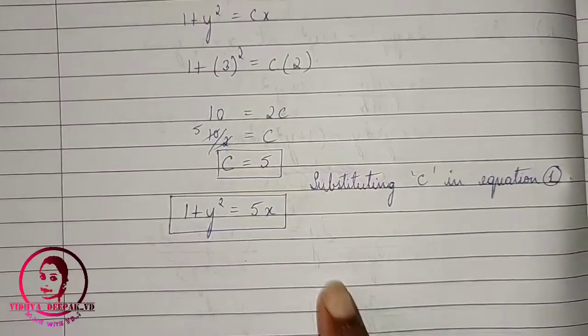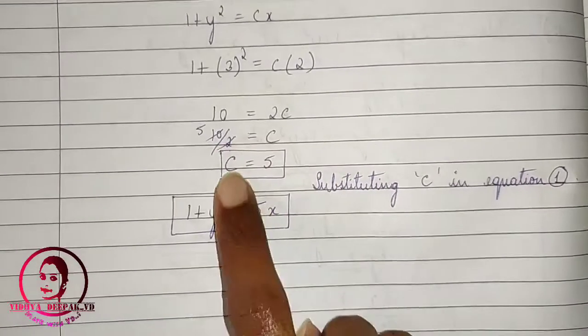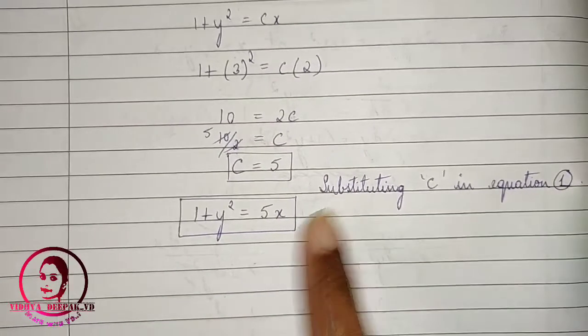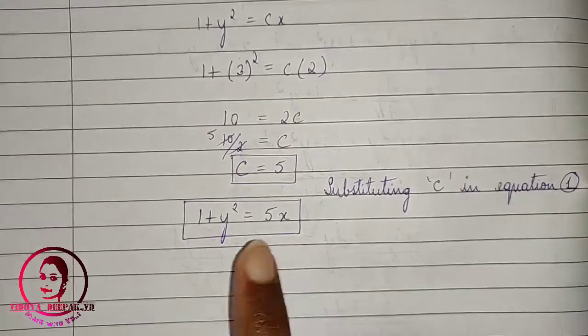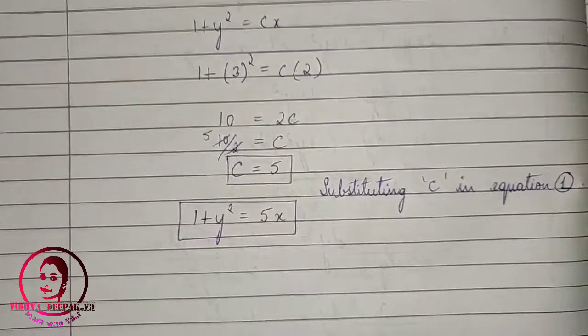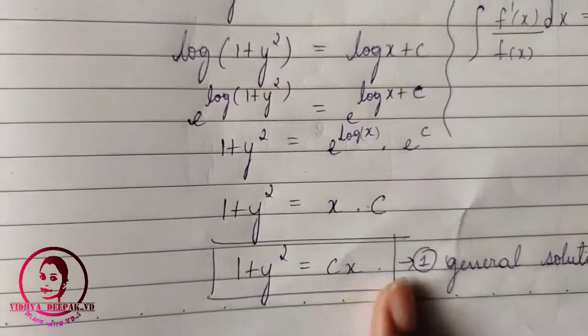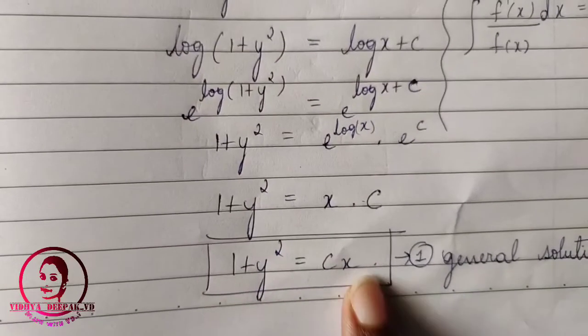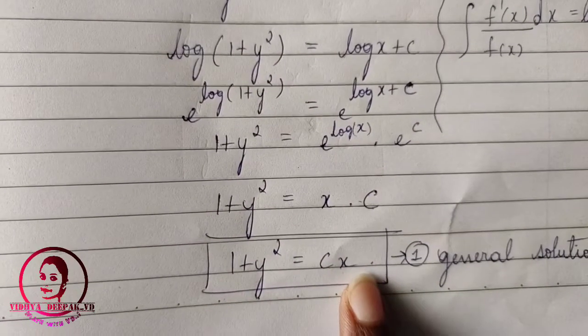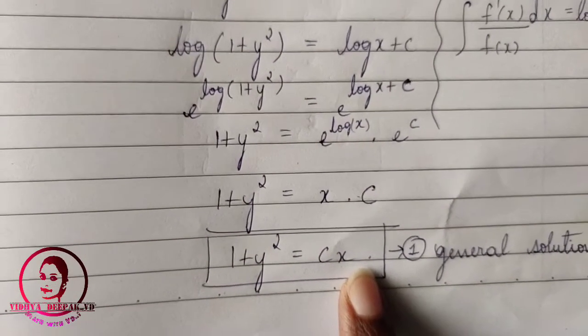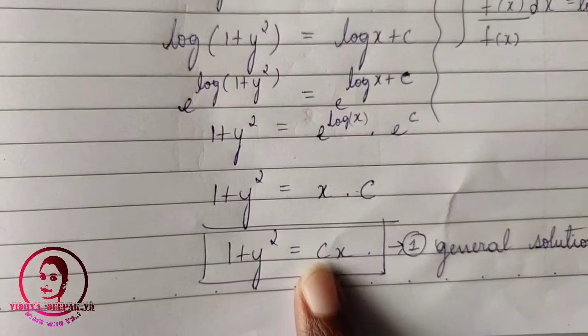You can also label the general solution as equation 1 and show c being substituted into it to get the particular solution.